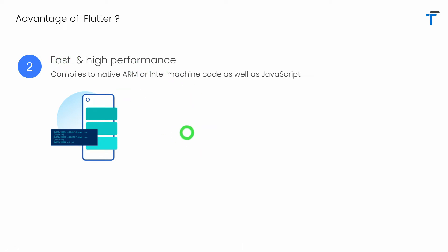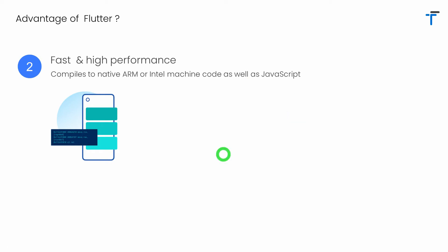Flutter code is actually compiled into native machine code. In the case of Android and iOS, it is converted into native ARM code. In the case of desktop, it is converted into native Intel machine code. The native code produced by Flutter definitely has high speed and high performance compared to other platforms.